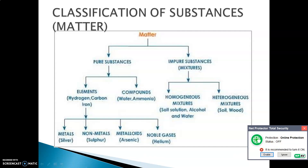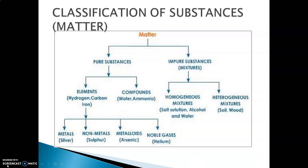Elements are classified into four parts: metals, non-metals, metalloids and noble gases. When we talk about impure substances, we generally call it a mixture. It is further classified into homogeneous mixture and heterogeneous mixture. In section A of your book we need to first complete pure substances, divided into two parts: elements and compounds.